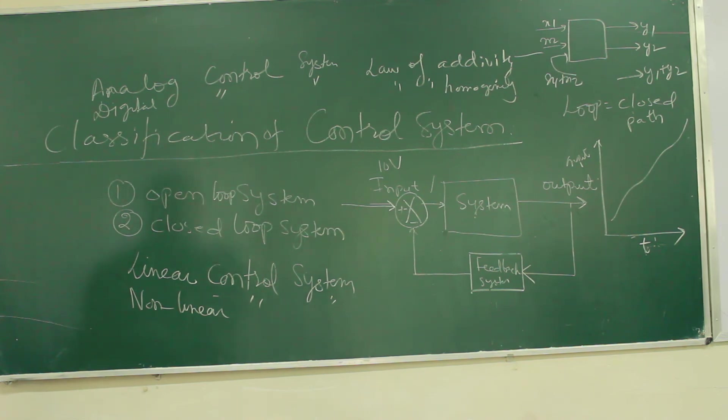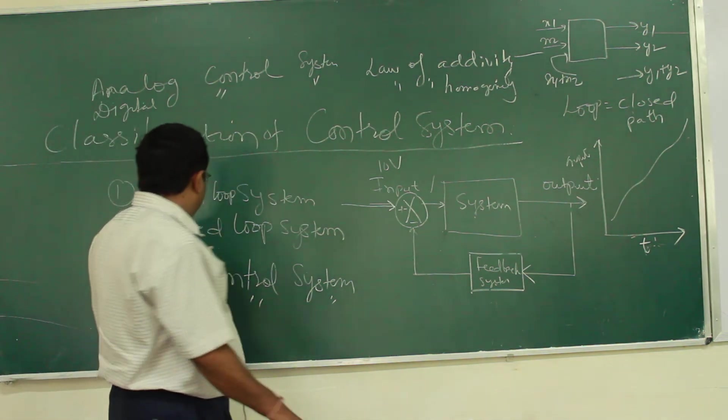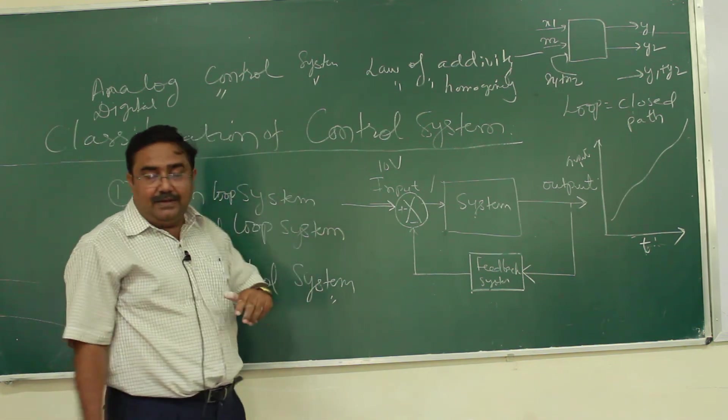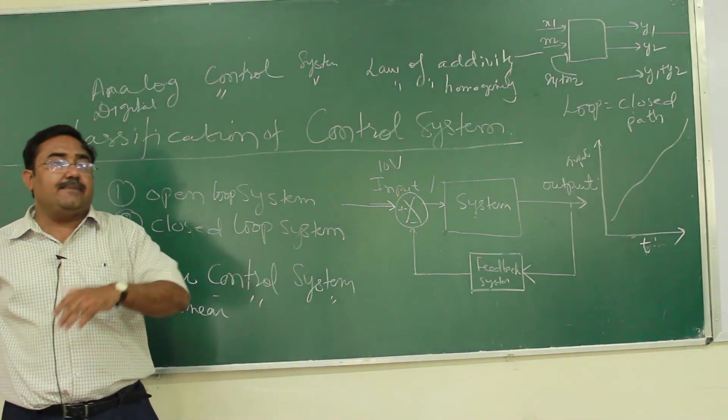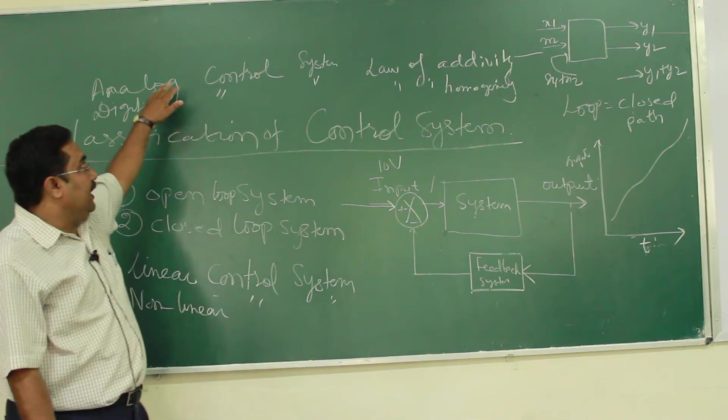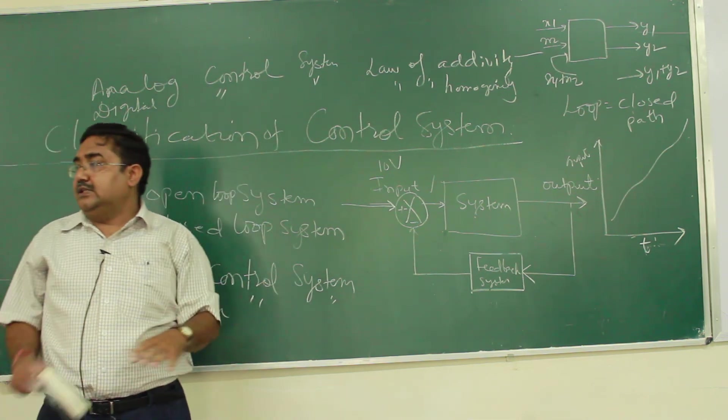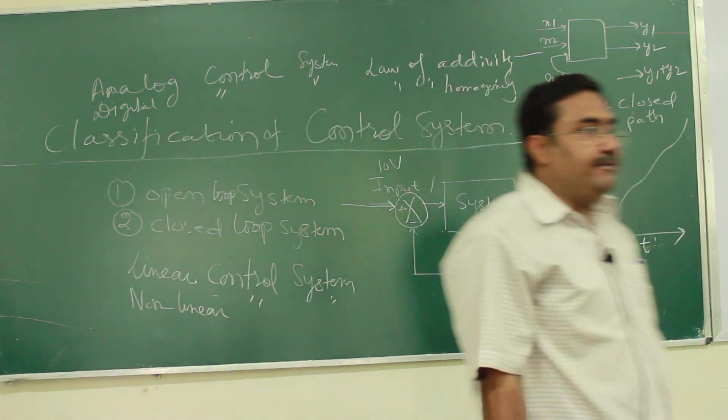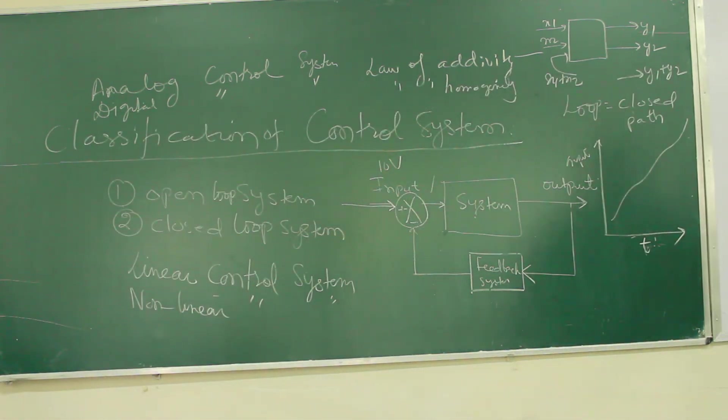There are lot more classifications. But in this semester, we will particularly come across either closed-loop system, open-loop system, time variant and time invariant system, linear system and non-linear system, analog system and digital system. There are many classifications, but we will be mainly coming through these systems. Natural control system, artificial control system.